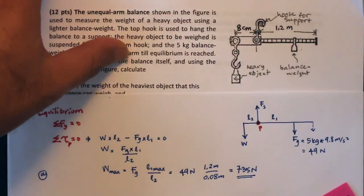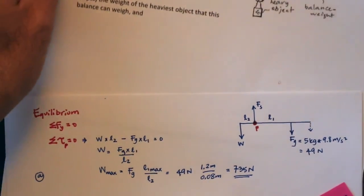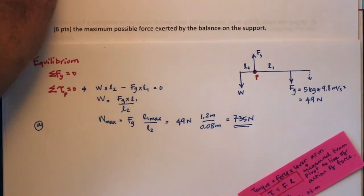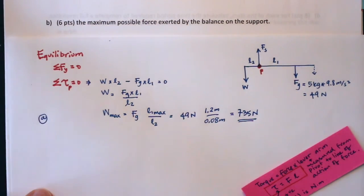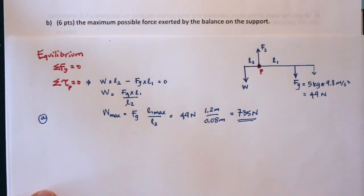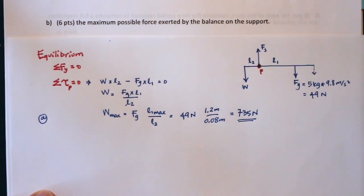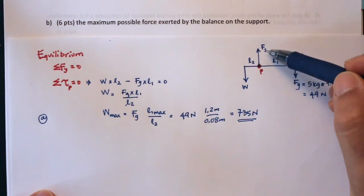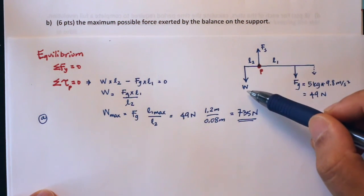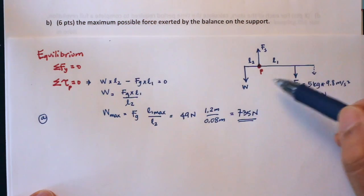The question for part b is asking what is the maximum possible force exerted by the balance on the support. So in other words, what is this maximum possible value for the force on the support, Fs?